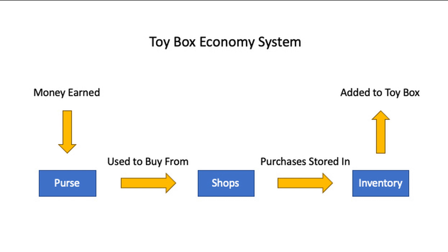So here's how it works. Players earn money in various ways, and that money is stored in a purse or a piggy bank. The money can be used to buy toys from a shop, and the toys that are purchased are then stored in the player's inventory. Players can then add toys from their inventory into the toy box. The money manager is the toy that manages the purse — the icon on the money manager is actually a piggy bank — so you can think of it as a purse or a piggy bank. Either one will do; it's where the money is stored.